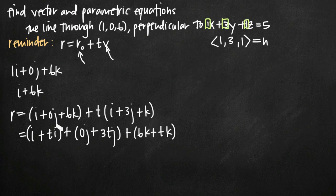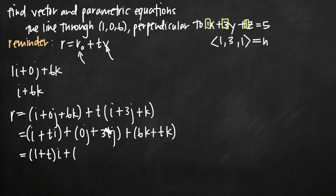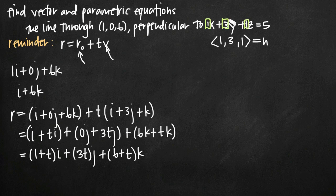Now I factor out i, j, and k from each grouping. From the first grouping I get (1 plus t)i. From the second I get 3tj. From the third I get (6 plus t)k. This gives me the vector equation of the line: r equals (1 plus t)i plus 3tj plus (6 plus t)k. This is the vector equation of the line passing through the point and perpendicular to the plane, or parallel to the normal vector (1, 3, 1).